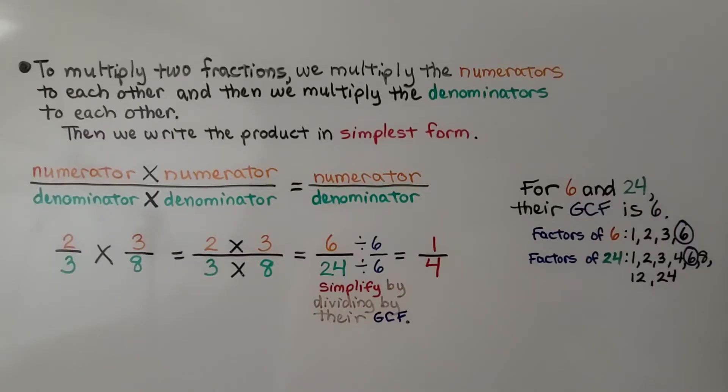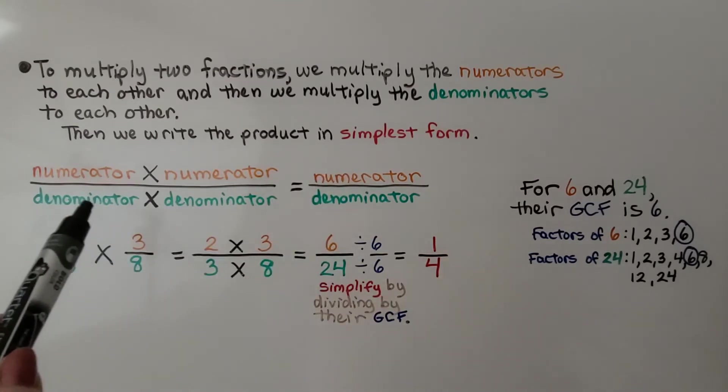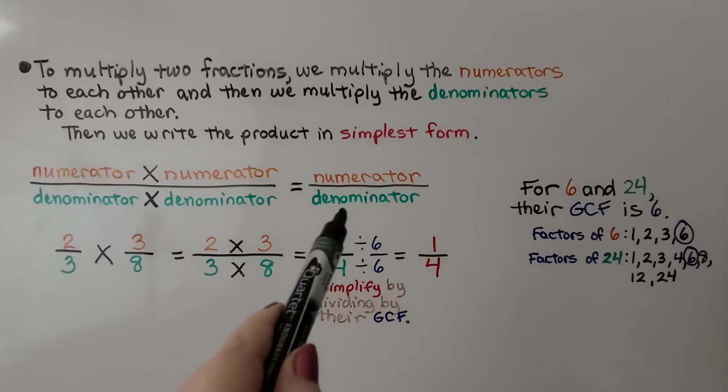To multiply two fractions, we multiply the numerators to each other, and then we multiply the denominators to each other. Then we write the product in simplest form. We have 2 thirds times 3 eighths. We do numerator times numerator and get a product for our numerator. Then we do denominator times denominator and get a product for our denominator.